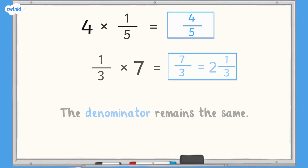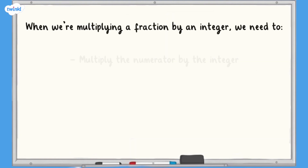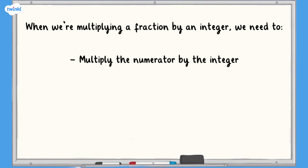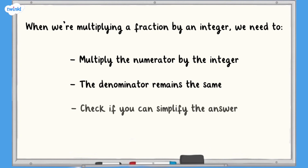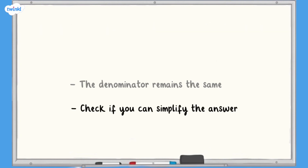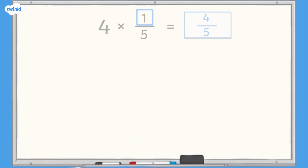When we're multiplying a fraction by an integer we need to multiply the numerator by the integer. The denominator remains the same. We might then need to simplify the fraction or convert it to a mixed number. So far we've looked at multiplying unit fractions where the numerator is 1. Let's use our same steps to multiply a non-unit fraction where the numerator is greater than 1.